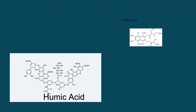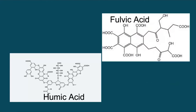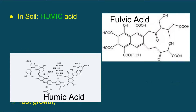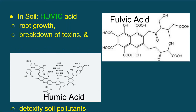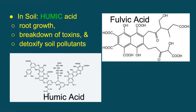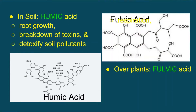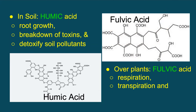Due to its smaller molecular size than humic acids, fulvic acid can carry vital nutrients from the soil into the plants. The presence of fulvic acid in soil helps in better root growth, rapid breakdown of toxins, and detoxification of soil pollutants. On plants, fulvic acids can increase respiration and transpiration, and enhance photosynthesis with improved nutrient uptake, even under adverse weather conditions.